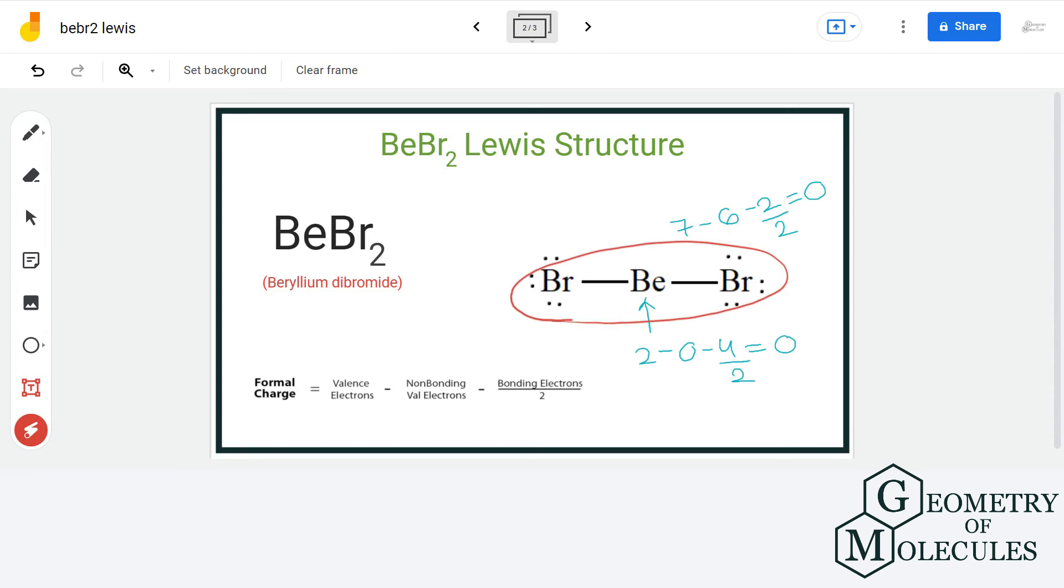Each atom in this molecule has zero formal charge and thus, we can say that this is the final Lewis structure of BeBr2.